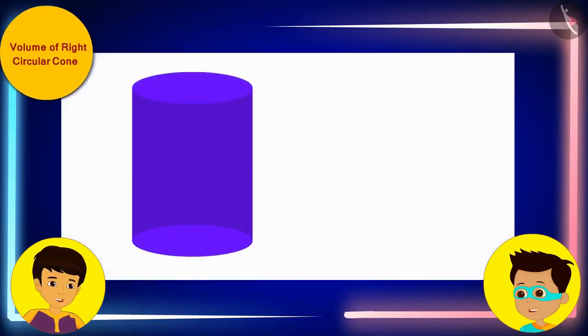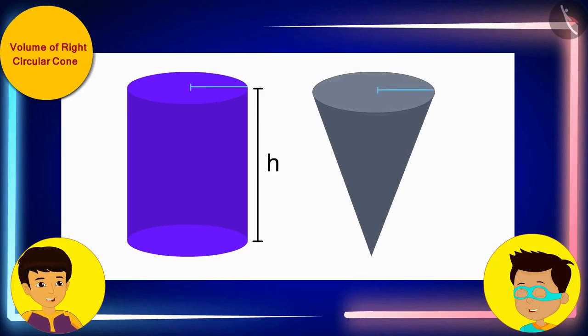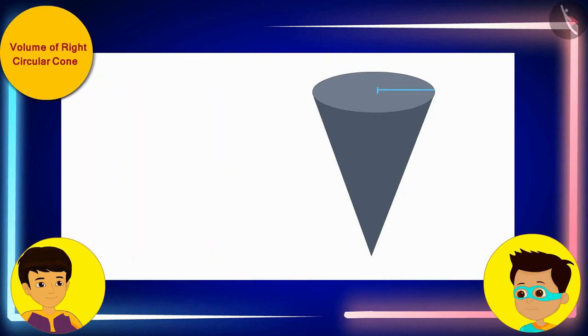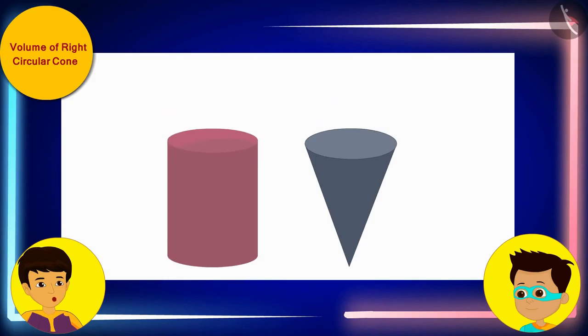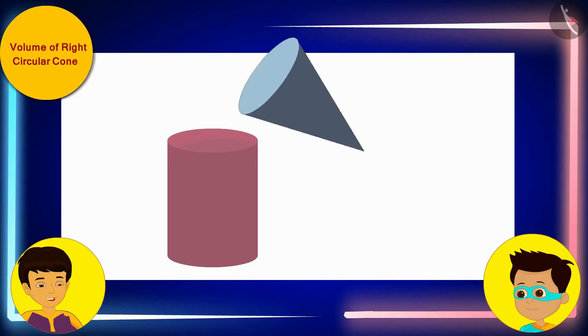Thomas, can you bring a cylindrical vessel, whose height and radius of the base are equal to this right circular cone? Of course, I'll bring it right away. Now we will first fill this right circular conical vessel completely with water up to the brim and pour this water into this cylindrical vessel.